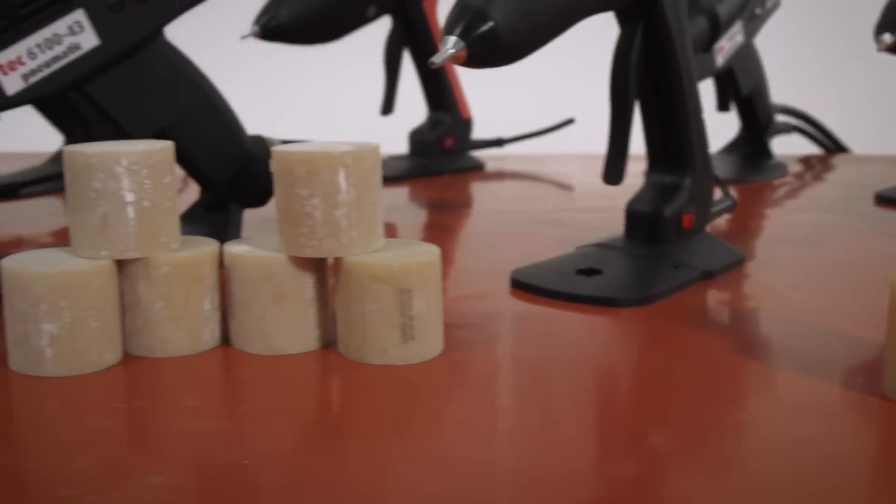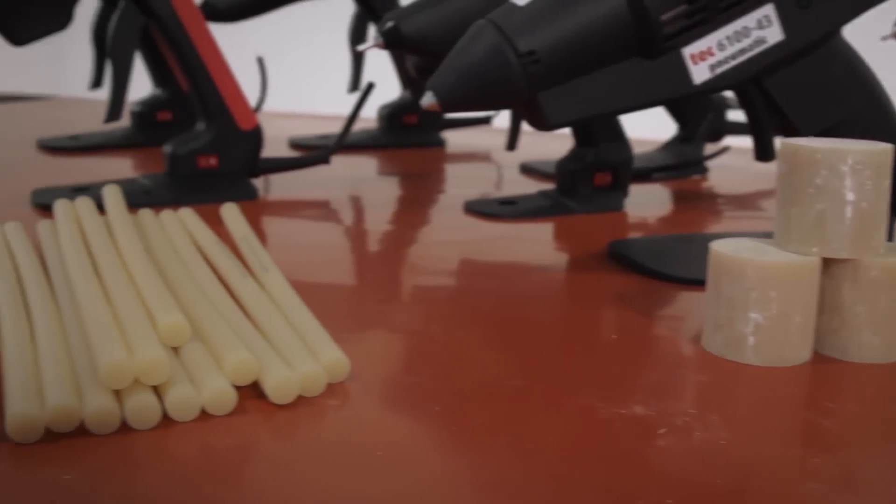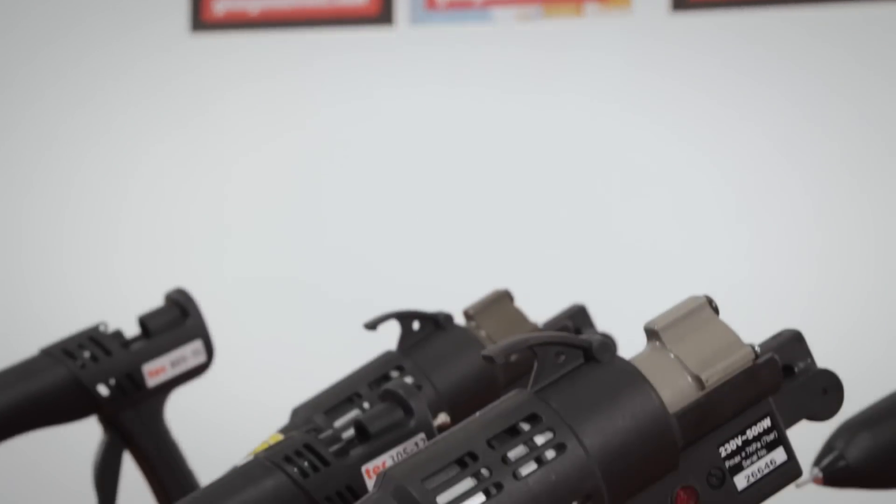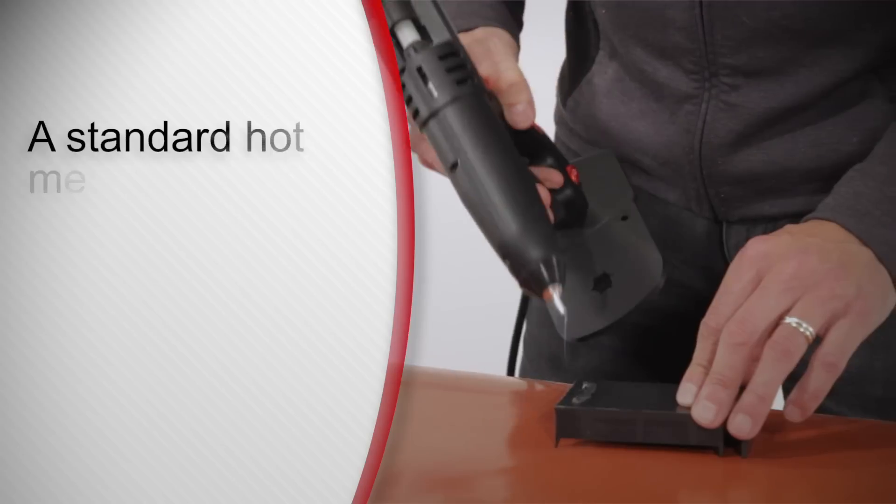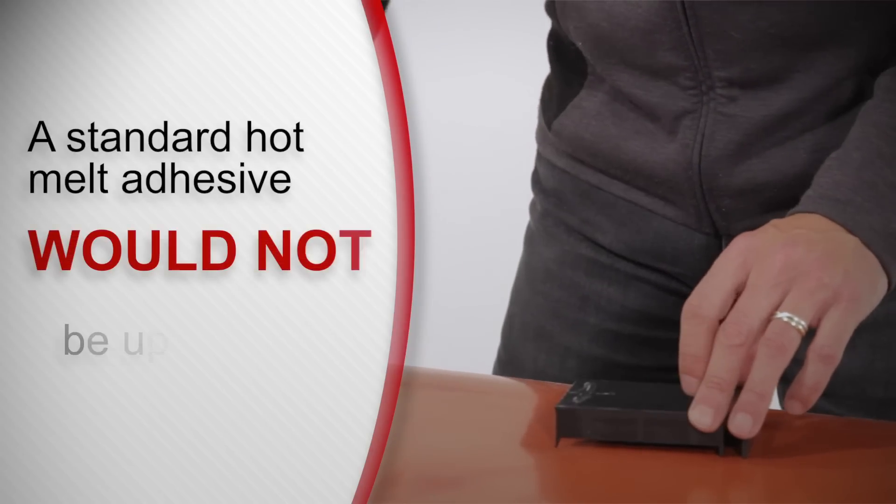With polypropylene it's not one glue for one application. More ethylene in the PP as a general rule means that it is more difficult to bond. A standard hot melt adhesive would not be up to the job.